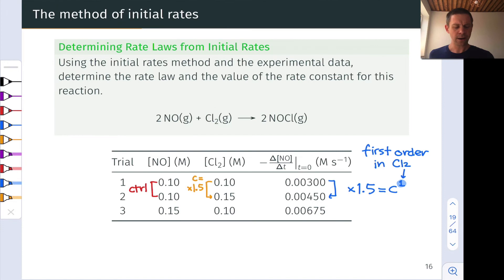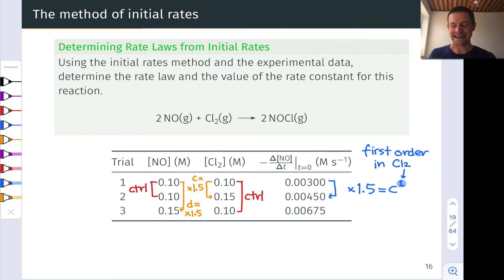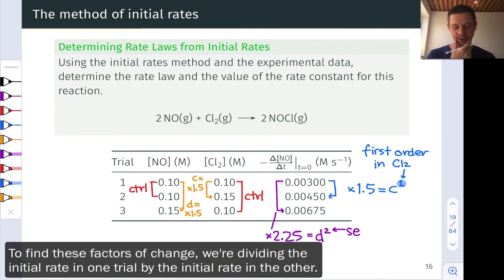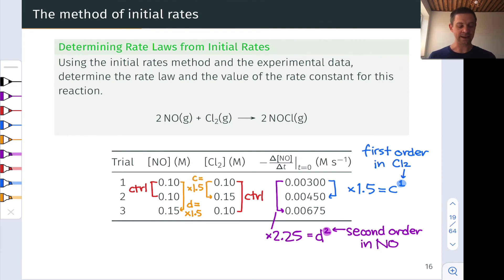For NO, the concentration changes between trials one and three — NO concentration is increased by a factor of 1.5, call it D, while the Cl2 concentration is controlled and kept constant at 0.1 molar across these two trials. So trials one and three give us insight into the kinetic order of NO. The initial rate increased by a factor of 2.25 from trial one to trial three, and this turns out to be D squared, or 1.5 squared. From this, we infer the reaction is second order in NO, since an increase in NO concentration by a factor of 1.5 led to an increase in rate by 1.5 to the second power.